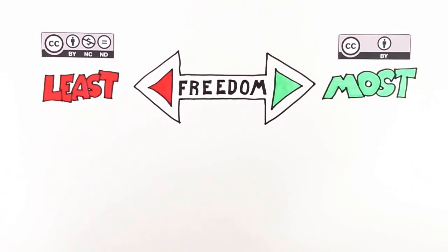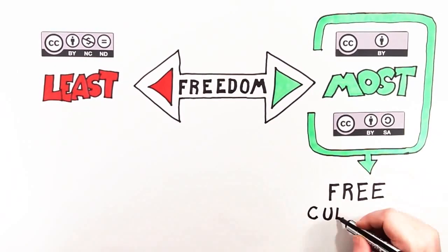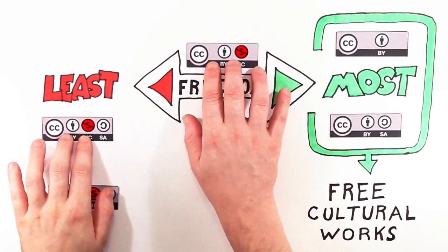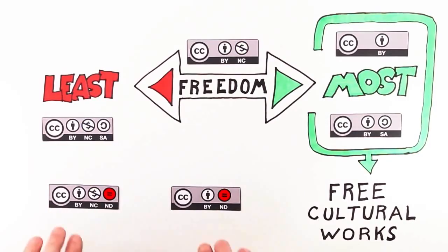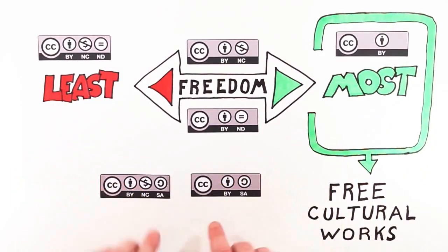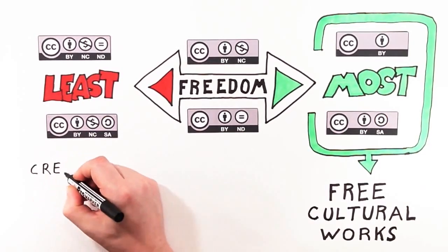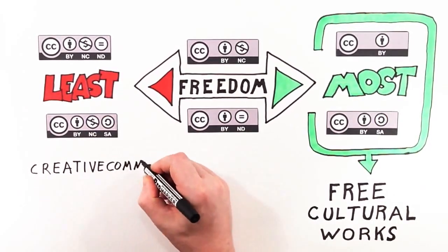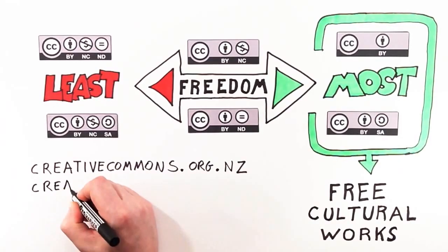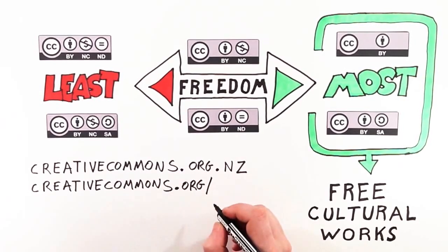The attribution license and the attribution share alike licenses are sometimes referred to as Free Cultural Works approved licenses. These three licenses restrict commercial use of a work, and these two licenses do not give permission for adapting or remixing. These two licenses require new works to be licensed under the same terms. To choose and apply one of these licenses and to view their terms in more detail, visit creativecommons.org.nz. Or you can answer some questions to help you decide which license best suits your needs at creativecommons.org/choose.